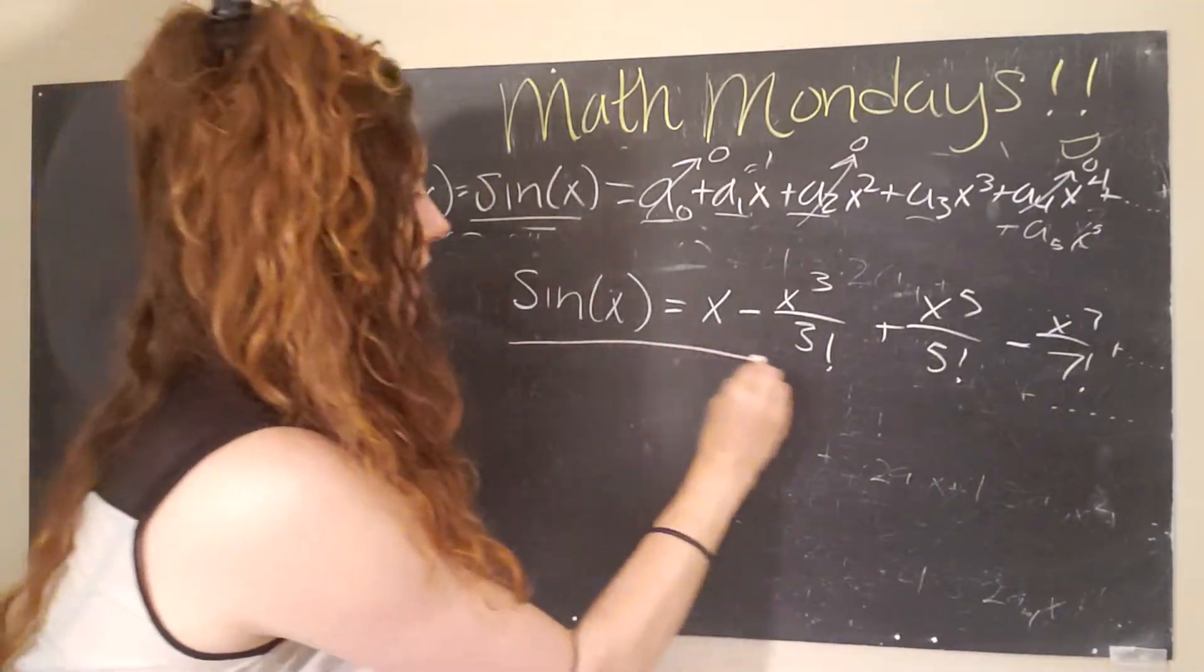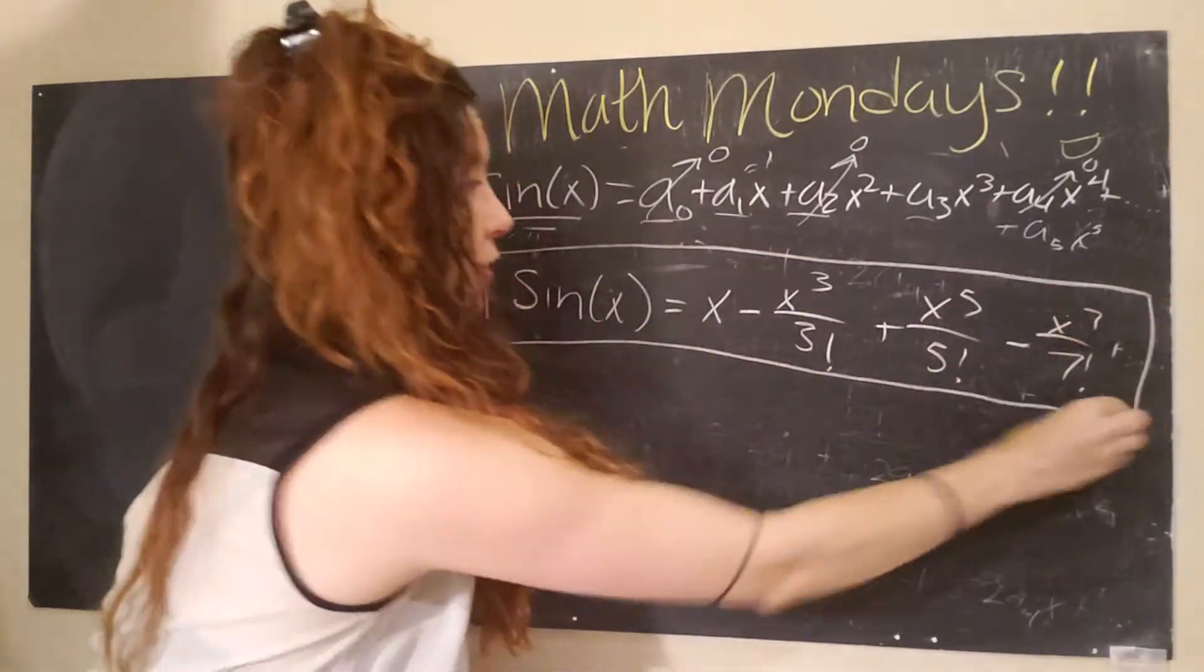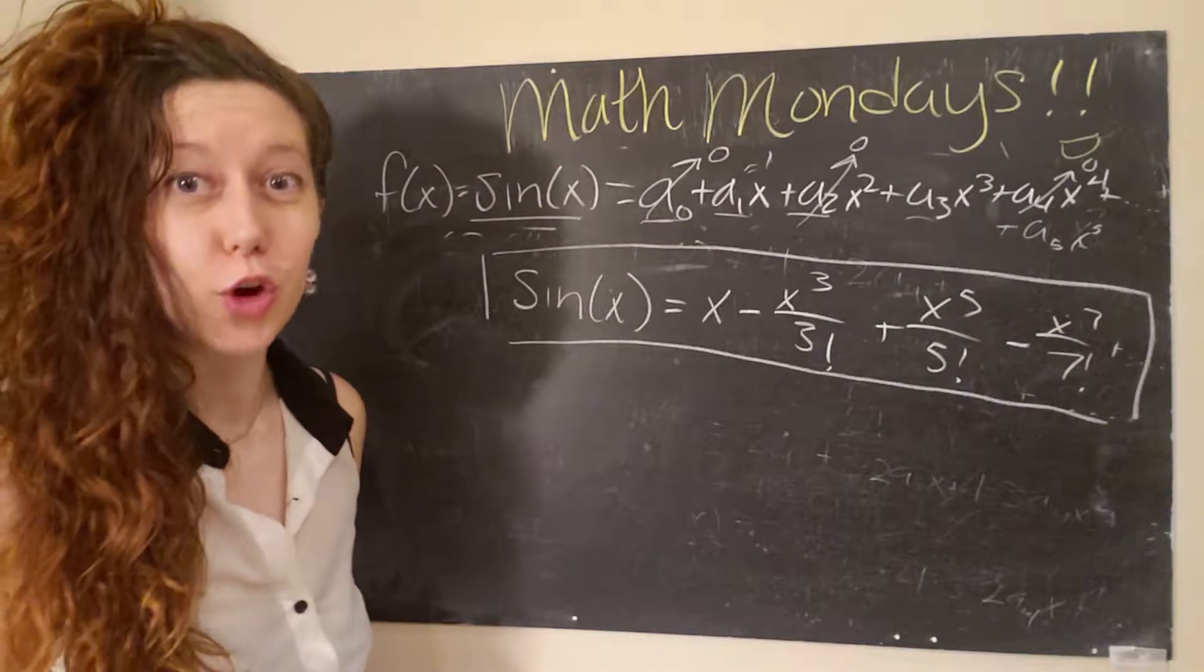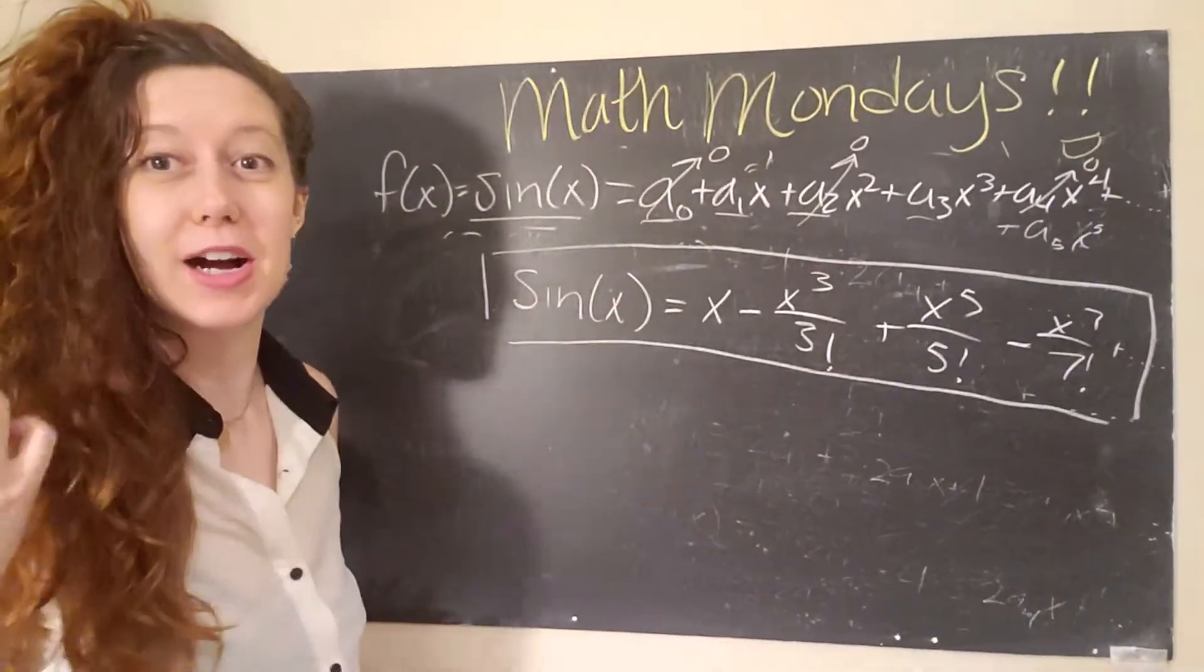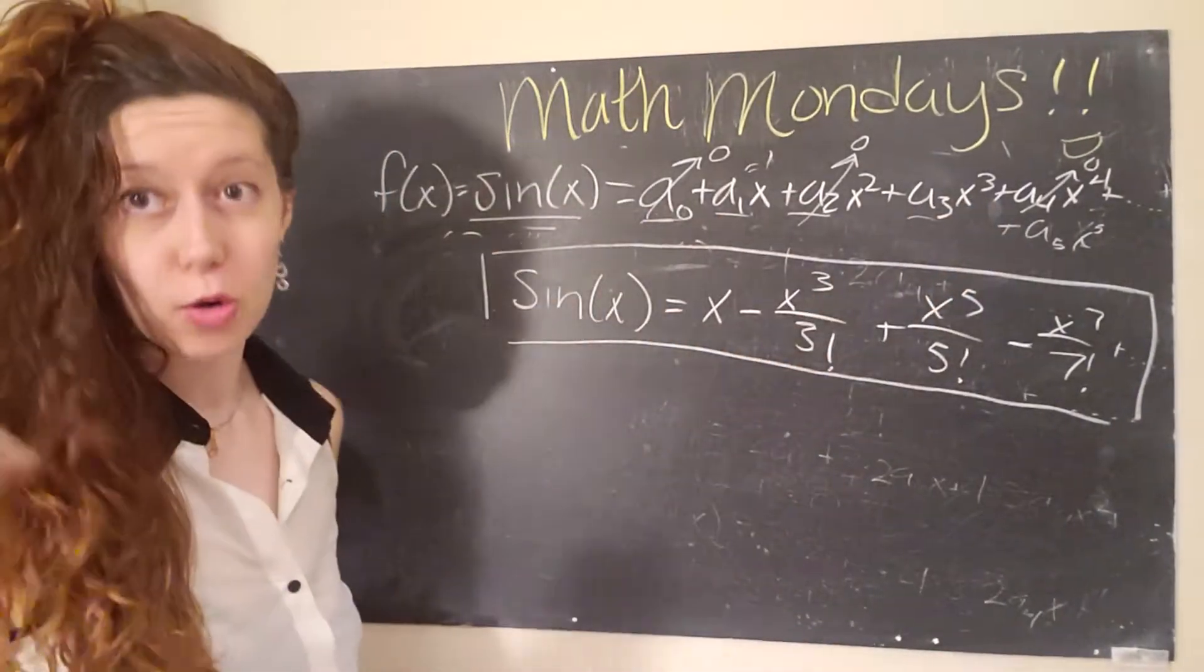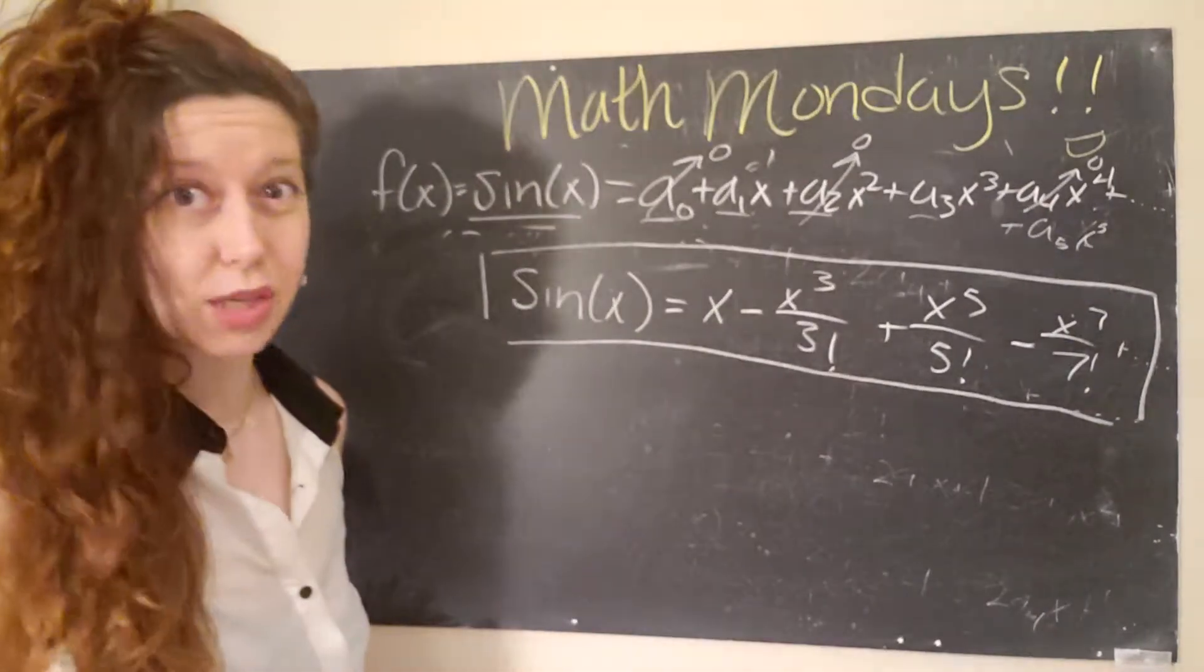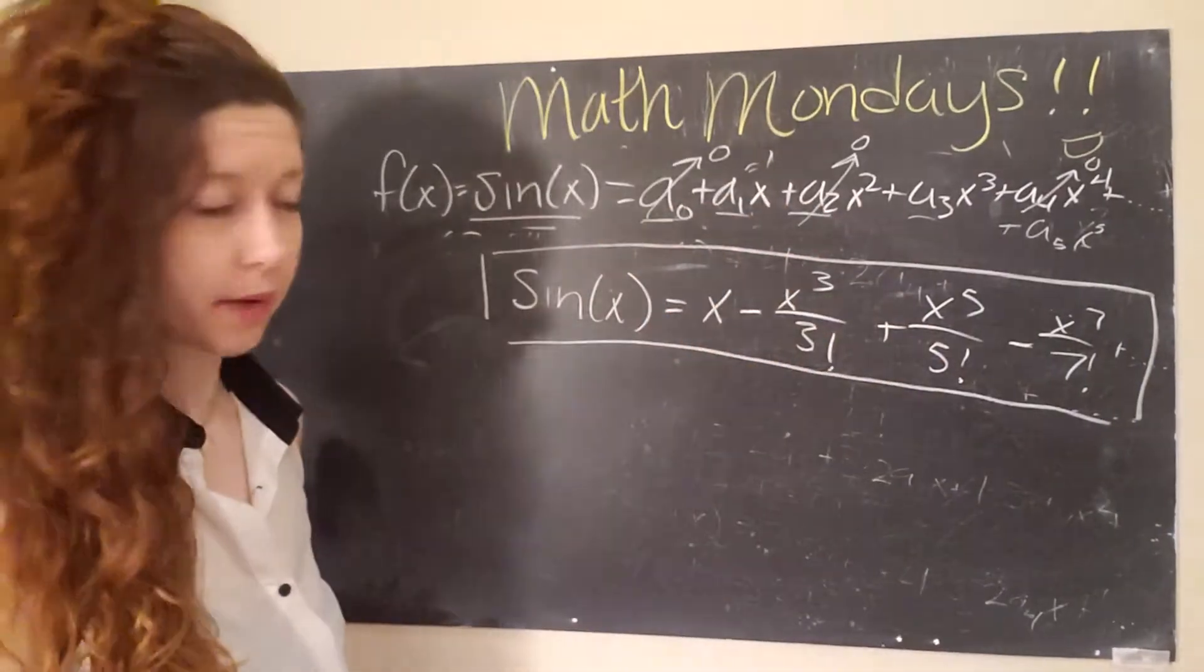So this is sine of x written in a power series format. Look at that. You can also do the same thing for cosine. I'm not going to do that right here. I would challenge you to do it on your own. You do the same exact thing. You start with a generic power series formula. You apply the boundary condition of at x equals zero, and then you solve for the coefficients one by one.